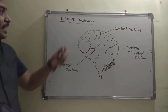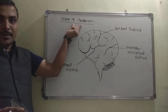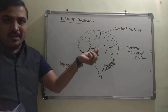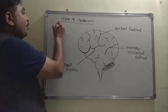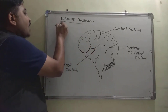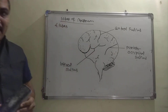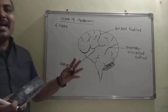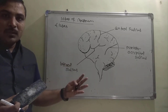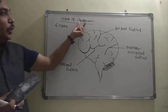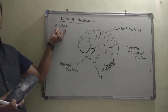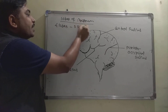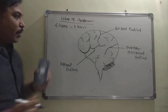Now we look at the lobes of the cerebrum. Each hemisphere of the cerebrum can be divided into 4 different lobes by 3 different sulci. The sulci here act as separations.